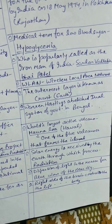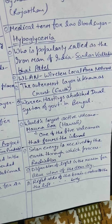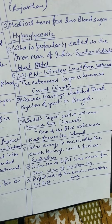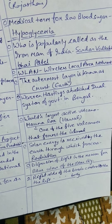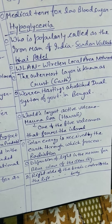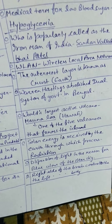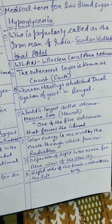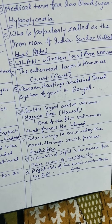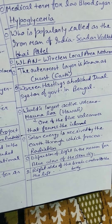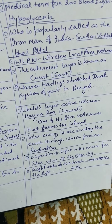WLAN stands for Wireless Local Area Network. The outermost layer of the earth is known as the crust. Warren Hastings abolished the dual system of government in Bengal. The world's largest active volcano is Mauna Loa in Hawaii — it is one of the five volcanoes that form the island.